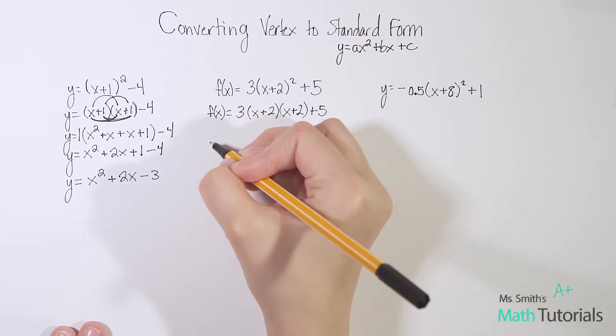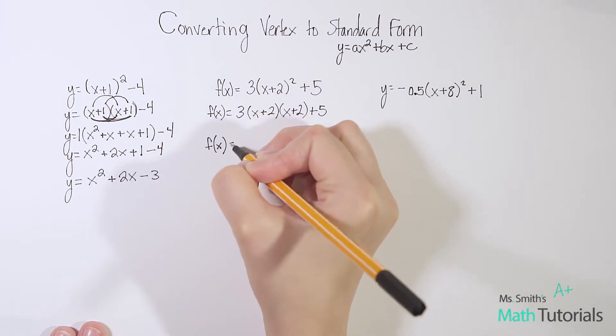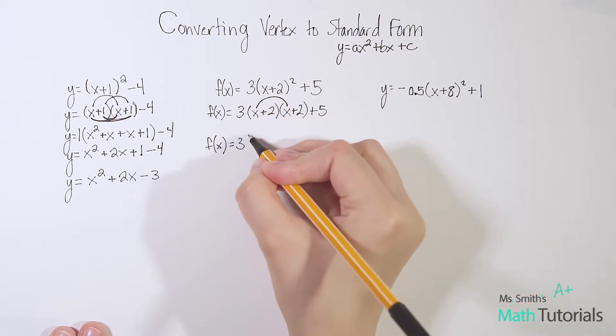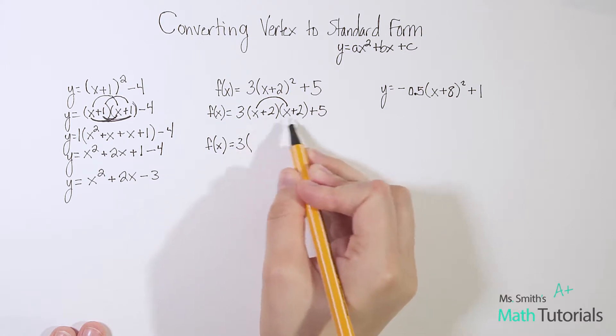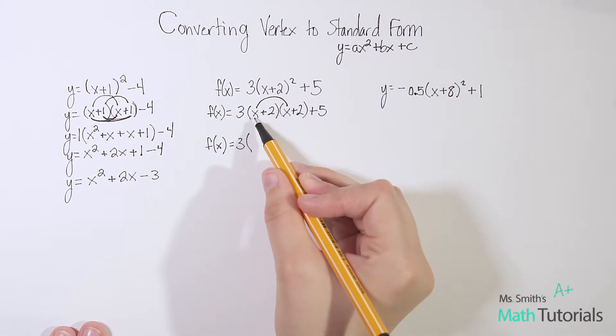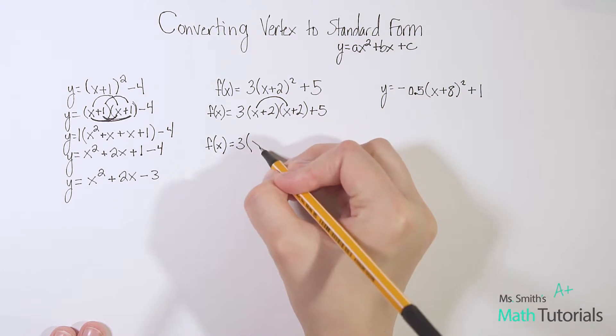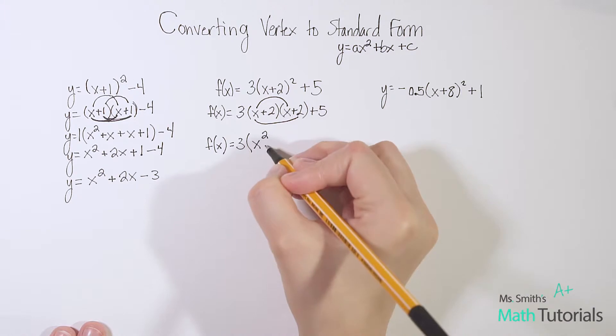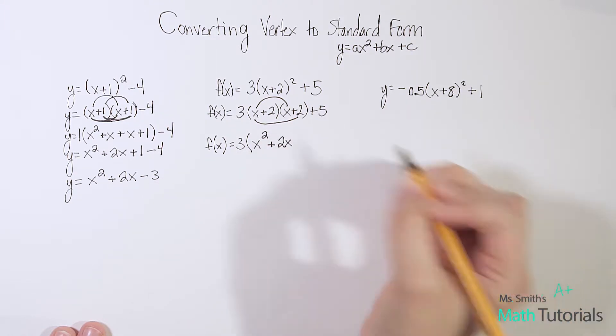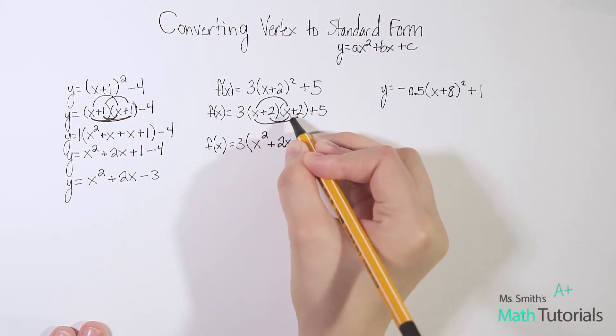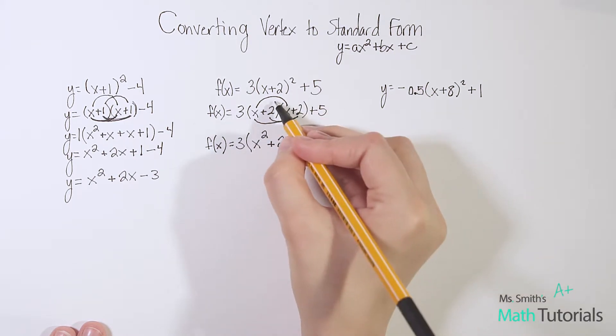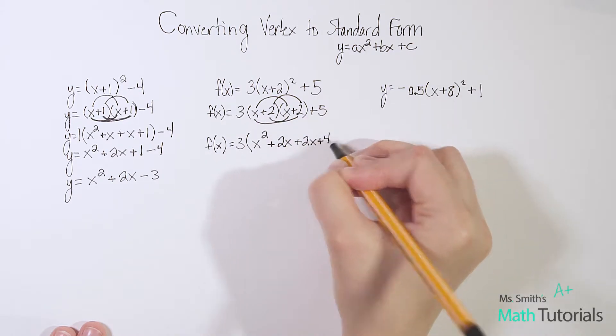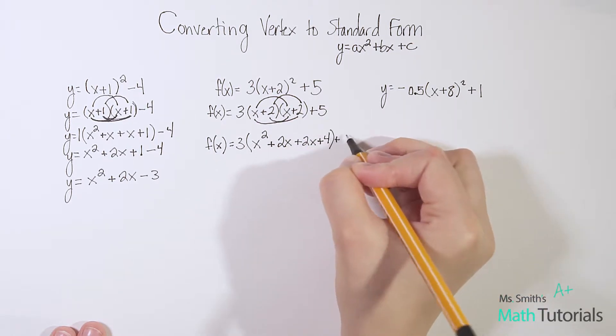The first thing I want to take care of is foiling. I've got a binomial times a binomial in the middle here. I want to go ahead and foil them. So foiling is first: x times x is x². Now our outer: x times 2 is +2x. Our inner: 2 times x is +2x. And then our last: 2 times 2 is +4. And then we have this +5 hanging out.